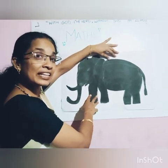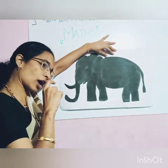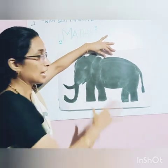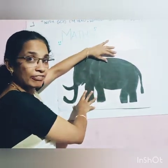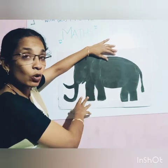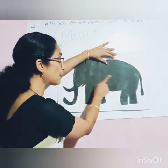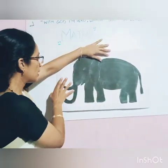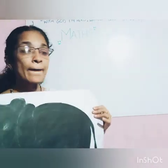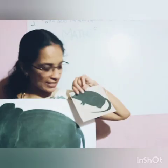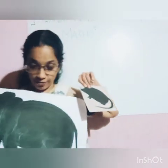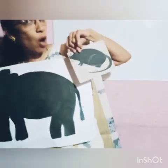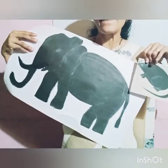Elephant. Elephant is big — the biggest land animal is elephant. The color of an elephant — it's a black color. So it's a big animal. Rat is a small animal, elephant is a big animal.